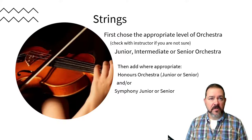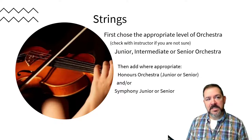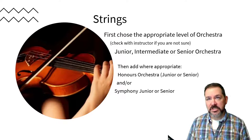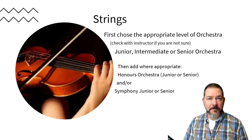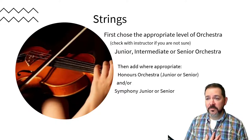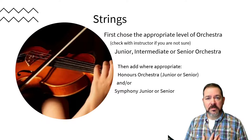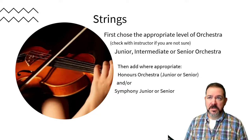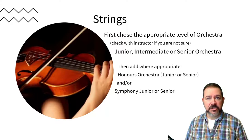You can see there's an overlap between band and strings with symphony, so there are a lot of ways to join each other in other classes. For strings, make sure you've talked to Ms. Anderson about what class you should be in — she's been speaking with each of you at the end of each quarter and is doing an audition process, so you should know where you need to go. Junior, intermediate, or senior orchestra is the first class you choose.